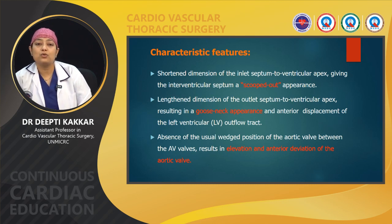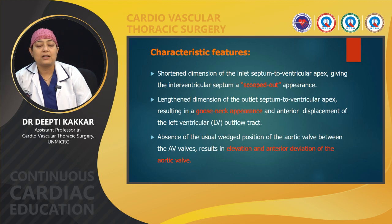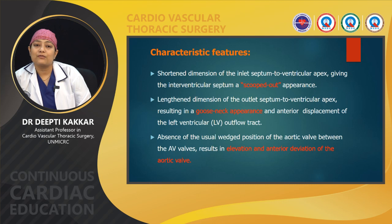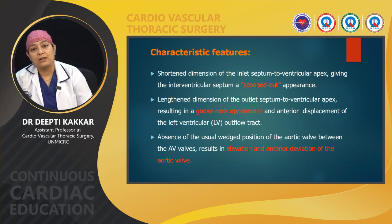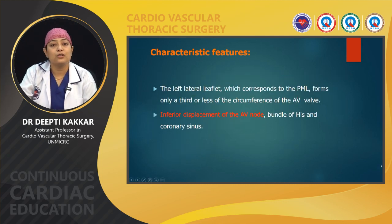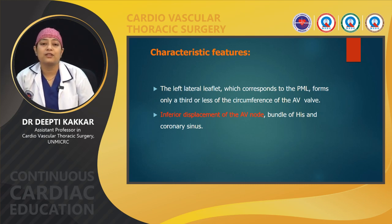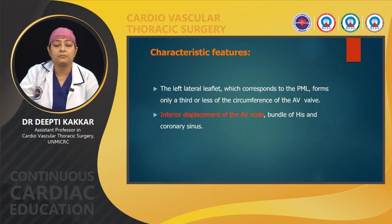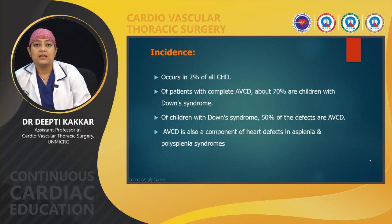The characteristic features arising from these abnormalities result in a scooped-out appearance of the interventricular septum. The lengthened dimension of the outlet septum to the ventricular apex results in a goose neck appearance, and there is anterior displacement of the LV outflow tract. The absence of the usual wedged position of the aortic valve results in elevation and anterior deviation of the aortic valve. There is also inferior displacement of the AV node and bundle of His. The posterior mitral leaflet (PML), which normally forms more than two-thirds of the mitral valve circumference, forms only less than a third in AVCD.